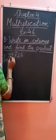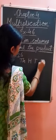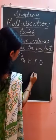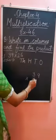Take the first question, 39 into 26. First, we write in columns. So here we write thousand, hundred, tens and ones. Below, we write down the number 39 into 26.